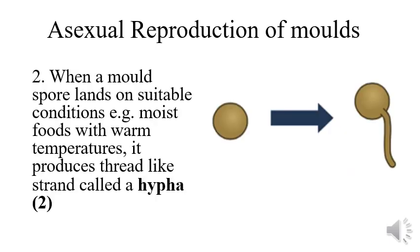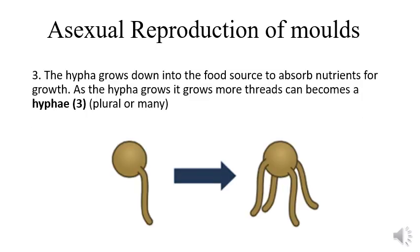The second stage of asexual reproduction in molds is that the singular spore, having landed on its favourable conditions, produces one singular hyphae — one singular thread that comes from the spore and is going to multiply over time. The third step is that the singular hyphae, now on the food, grows down into it to absorb valuable nutrients. As the hyphae begins to absorb nutrients, the spore begins to produce many more threads called hyphae, which give the mold the nutrients it needs to continue its asexual reproduction.